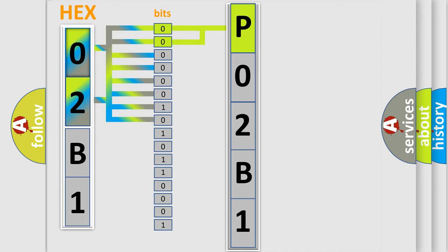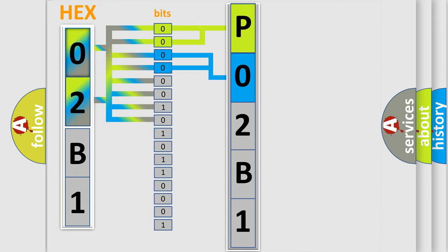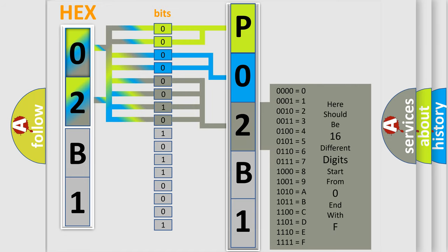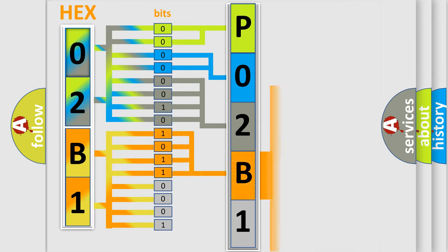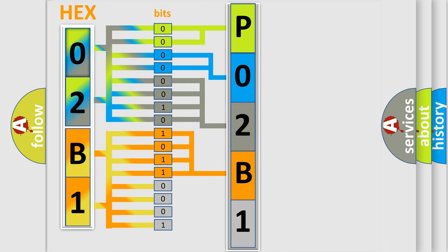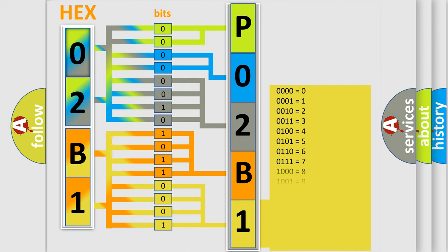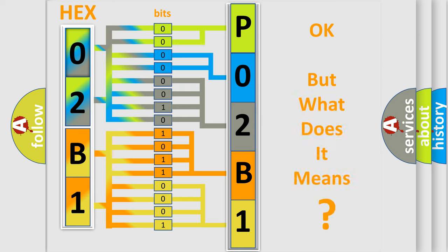The next two bits determine the second character. The last bits of the first byte define the third character of the code. The second byte is composed of a combination of eight bits. The first four bits determine the fourth character, and the combination of the last four bits defines the fifth character. A single byte conceals 256 possible combinations. We now know in what way the diagnostic tool translates the received information into a more comprehensible format.